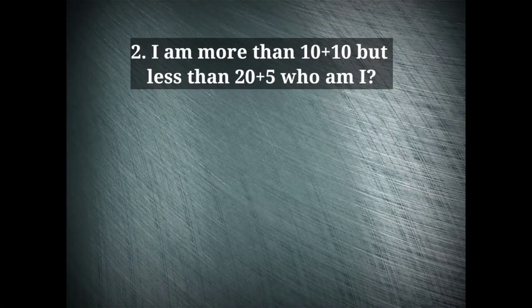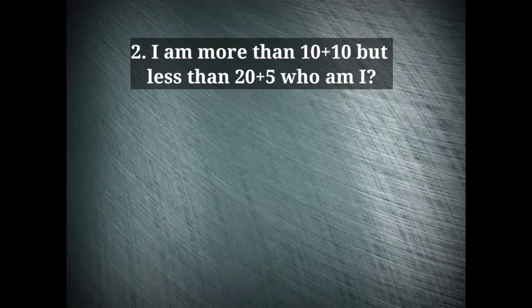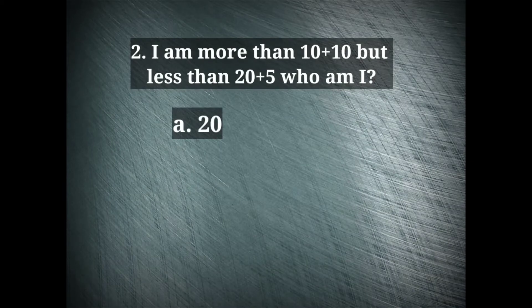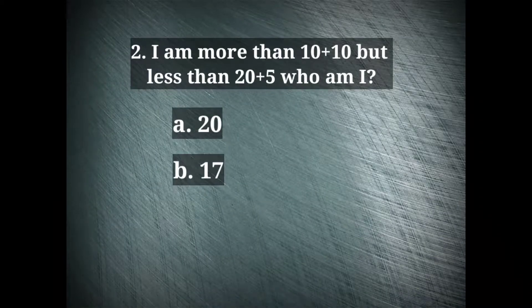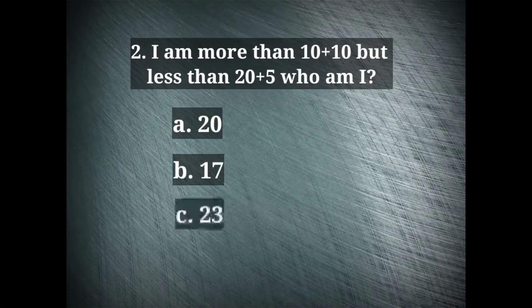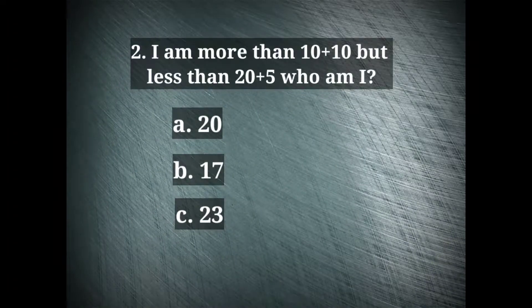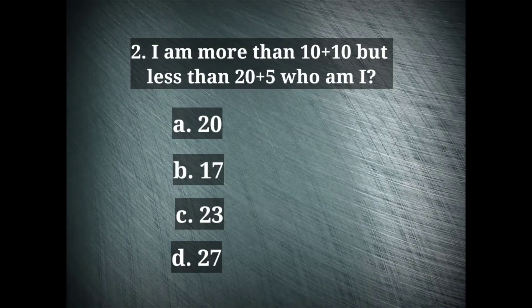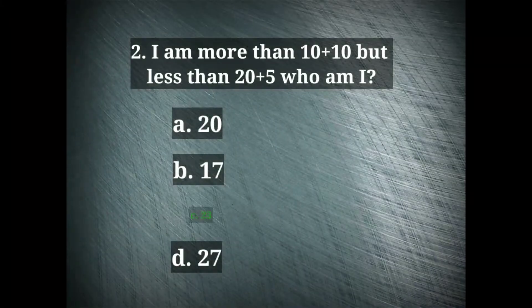The next question is, I am more than 10 plus 10 but less than 20 plus 5. Who am I? The options are 20, 17, 23 and 27. The right option here is 23. This is because it is the only number here which is more than 20 and less than 25.